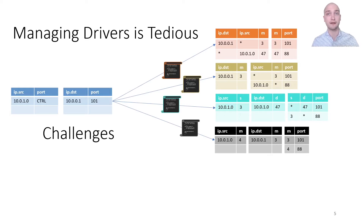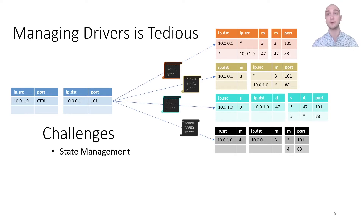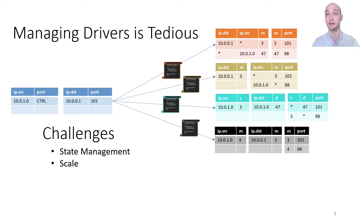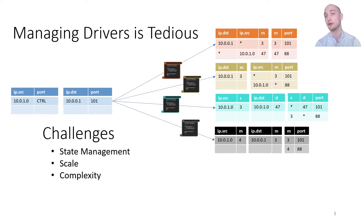And there are many challenges in writing these translations in the real world. We've already seen that they're not pure functions on operations, but rather depend on the rules already installed, which requires careful state management. Real-world pipelines are also on a different scale than the simple examples we've seen, comprising dozens of tables, often with intricate dependencies between them. Real-world pipelines also offer more complex functionality — they do more than just L2/L3 forwarding, offering features like tunneling, access control, and load balancing.